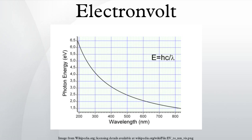The energy E, frequency ν, and wavelength λ of a photon are related by E equals hν equals hc/λ, where h is the Planck constant, c is the speed of light. A photon with a wavelength of 532 nm would have an energy of approximately 2.33 eV.